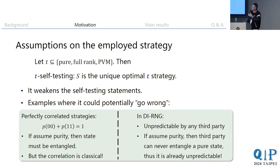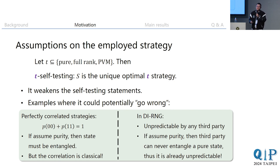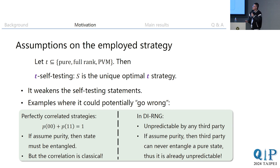These assumptions can really be problematic in some cases. Here we have a naive example with perfectly correlated strategies, where Alice and Bob are given only one question but always have to give the same answer. If we assume purity, we conclude the state must be entangled — because a product state can't produce correlated answers. But this correlation is purely classical and can be achieved even by a mixed separable state, so the purity assumption leads to an incorrect conclusion.